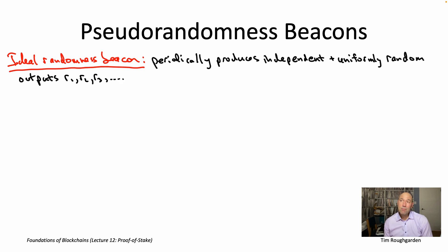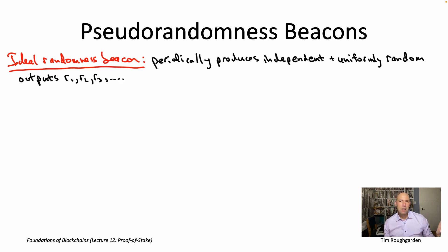This approach, while popular, does have some issues which we will be discussing. After this video, we're going to have two more videos on a more sophisticated approach that crowdsources randomness as an approximation to an ideal randomness beacon. The key tool there is verifiable delay functions, or VDFs — an approach which is just starting to make its way into practice. It's still pretty experimental, but in the next generation of proof-of-stake blockchain protocols, this VDF-based approach may well become best practice.